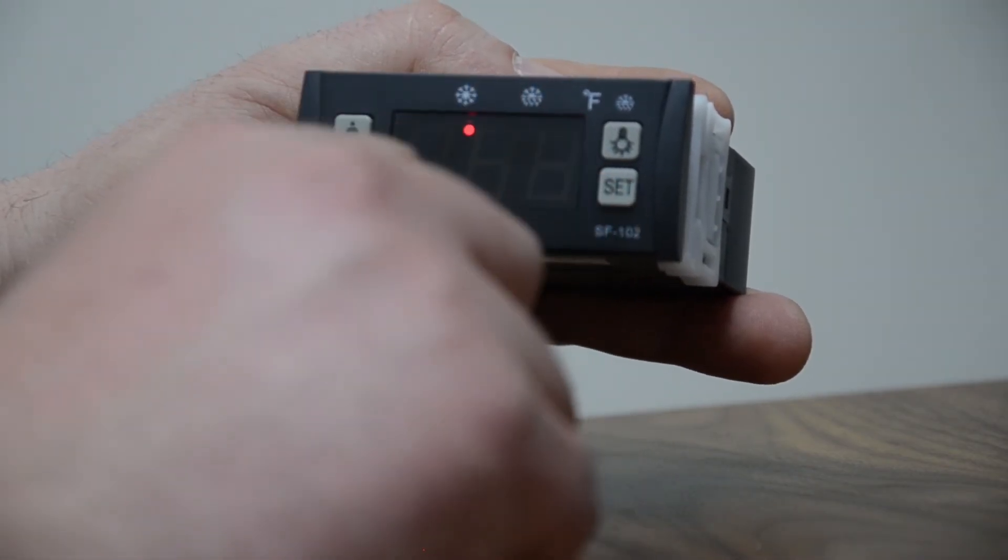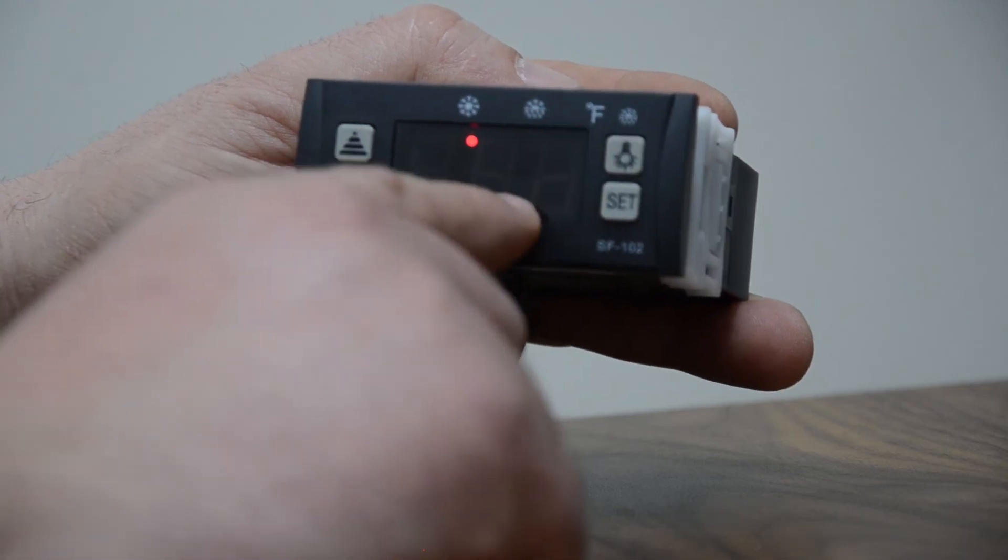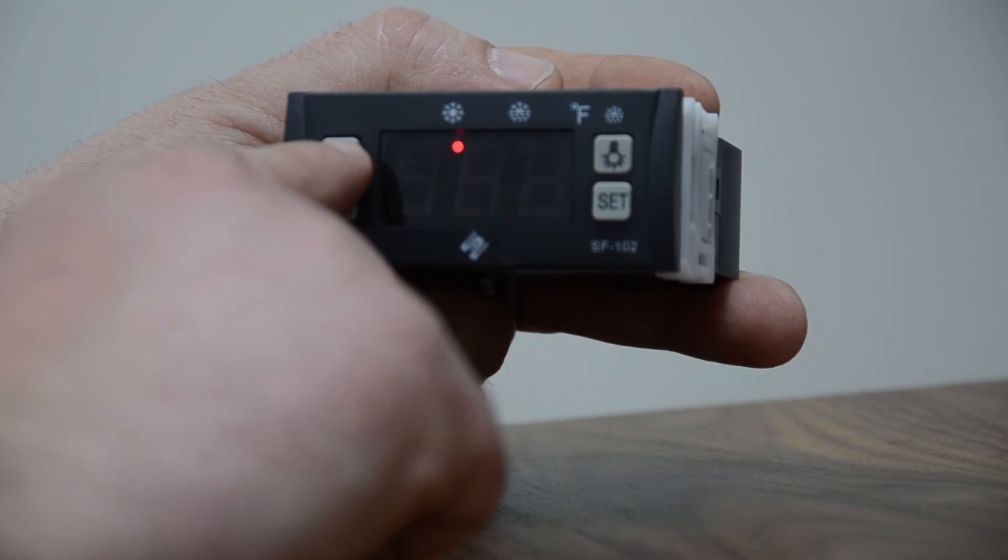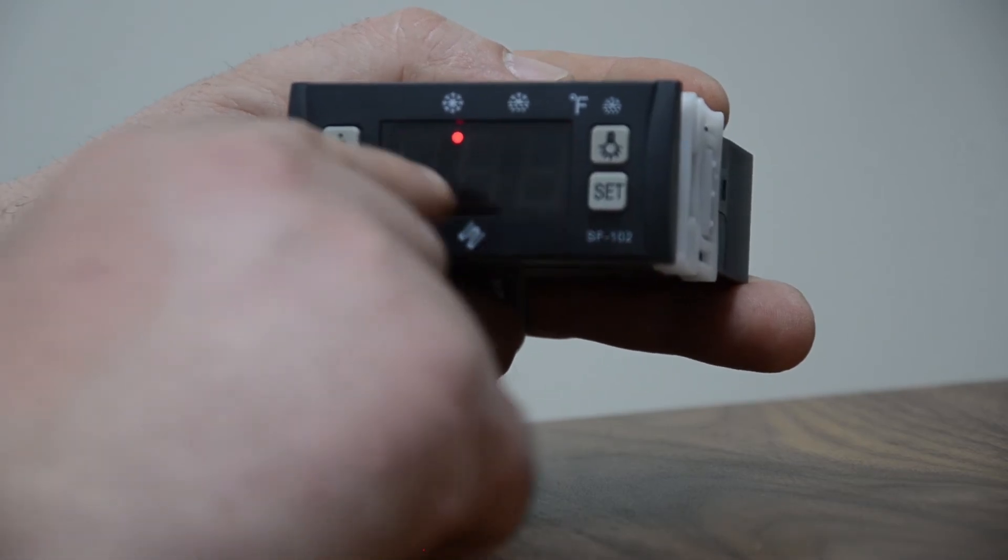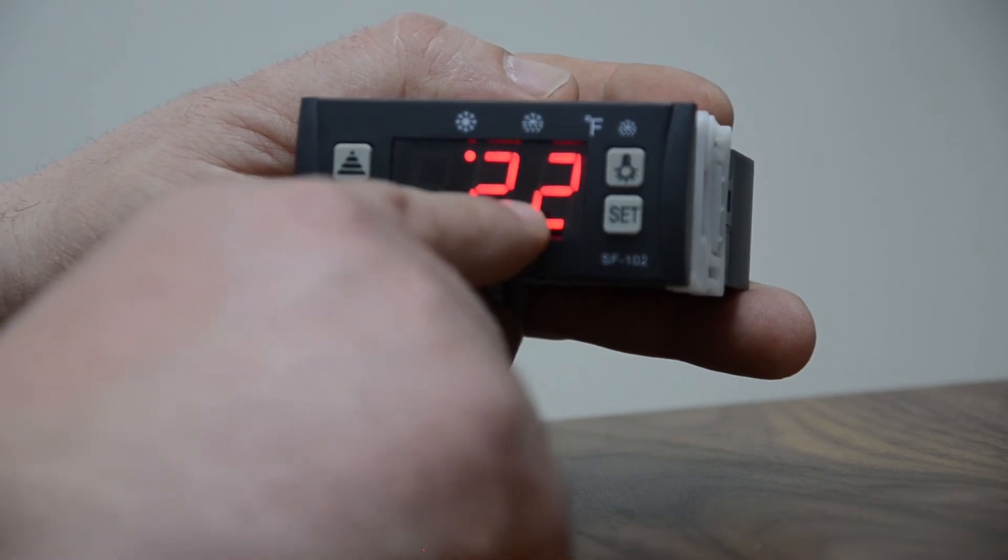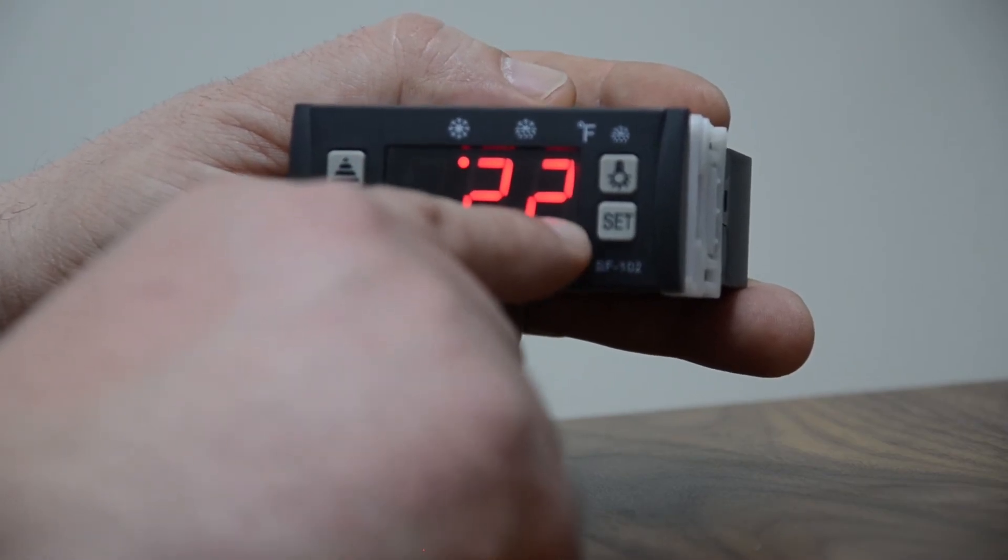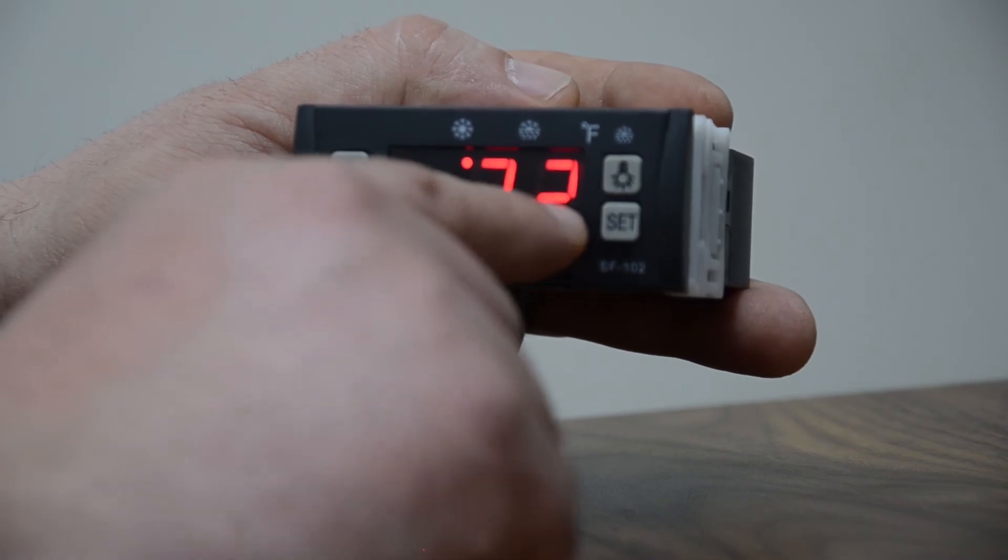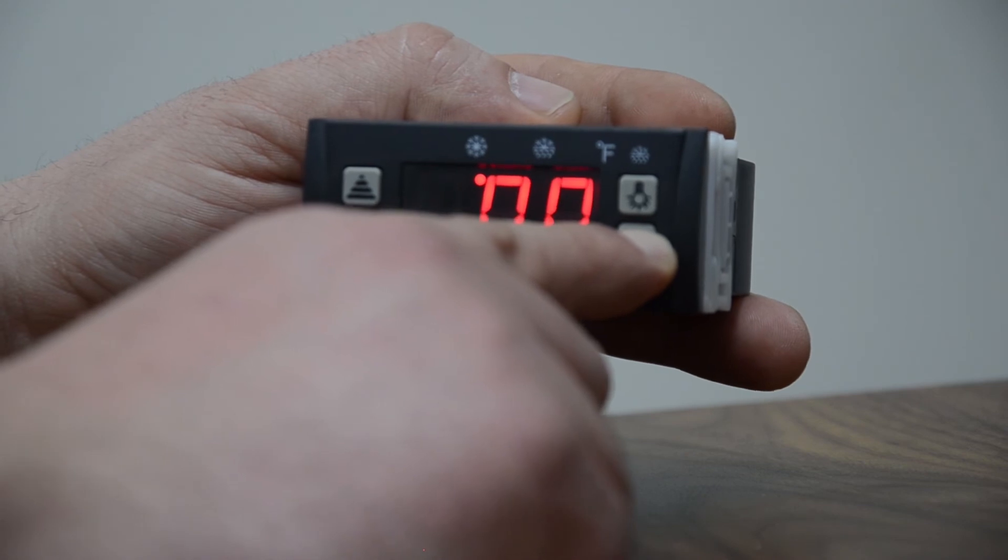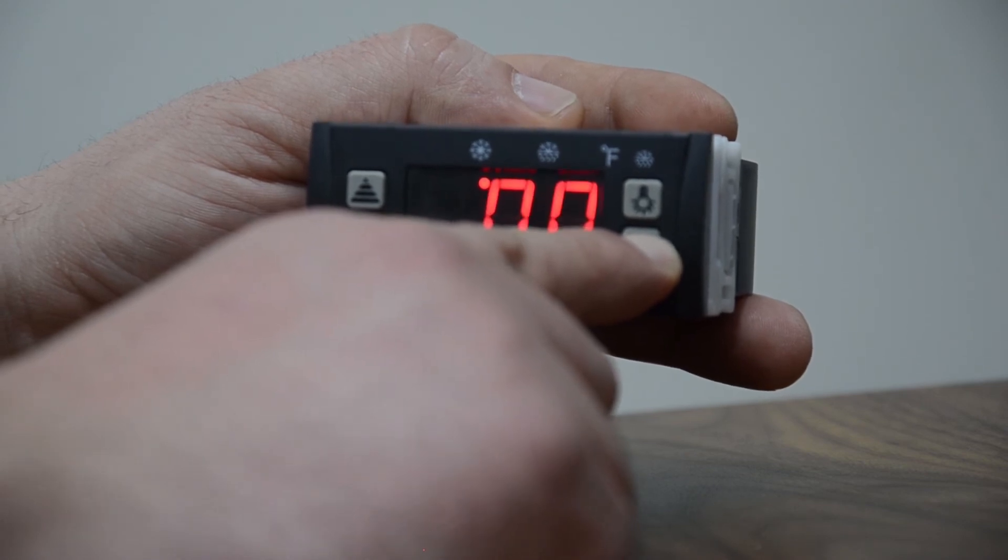F3 is defrost termination temp and we usually keep it at 12. The reason why we do that is because it's either going to do 20 minutes to 25 minutes and defrost, or if it reaches 12 degrees first, it will stop the defrost and kick back on because you don't want the products inside to get too warm. F3, we want at 12 degrees.